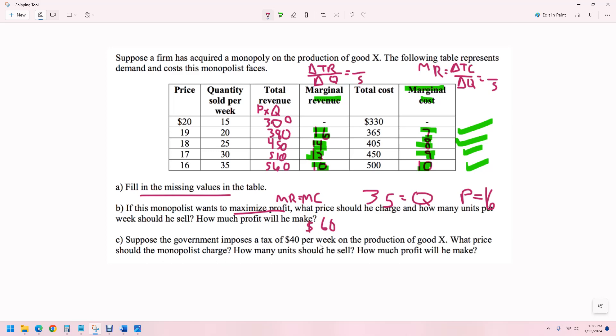Suppose the government puts a $40 tax on the production of good X. What price should the monopolist charge? What we need to do is we need to add per week. So each week, we're just going to add $40 to that. So now I want total cost plus lowercase t for tax. So this would be 370, this would be 405, this turns into 445, 490, and 540.